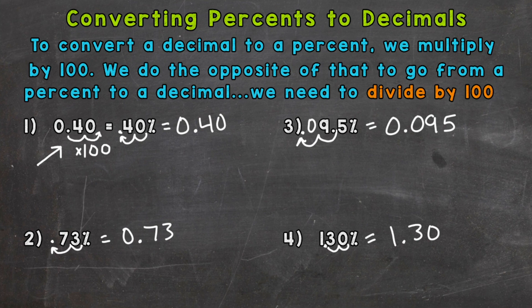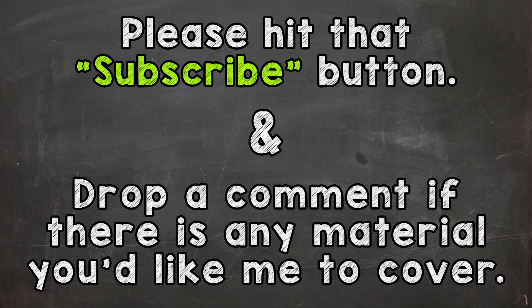So there you have it. There's how you convert a percent to a decimal. And I'll read up top again here. So to convert a decimal to a percent, we multiply by 100. We do the opposite of that to go from a percent to a decimal. So we need to divide by 100. Hopefully that helped. Thanks so much for watching. Until next time, peace.